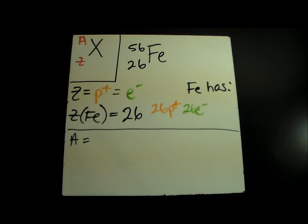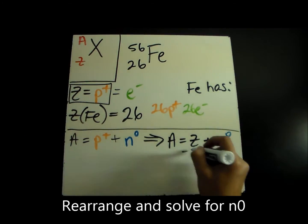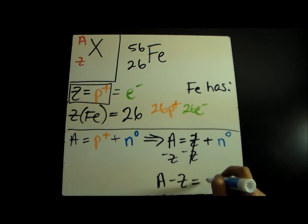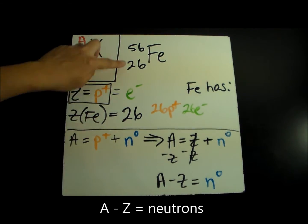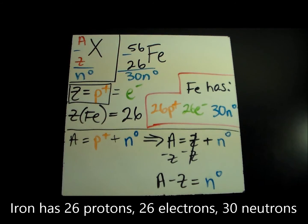The mass number A is equal to the number of protons plus the number of neutrons. Because Z equals the number of protons, this equation can be rewritten. If we rearrange this equation, we see that the mass number minus the atomic number is equal to the number of neutrons. So for iron, A minus Z equals 30 neutrons. All in all, iron has 26 protons, 26 electrons, and 30 neutrons.